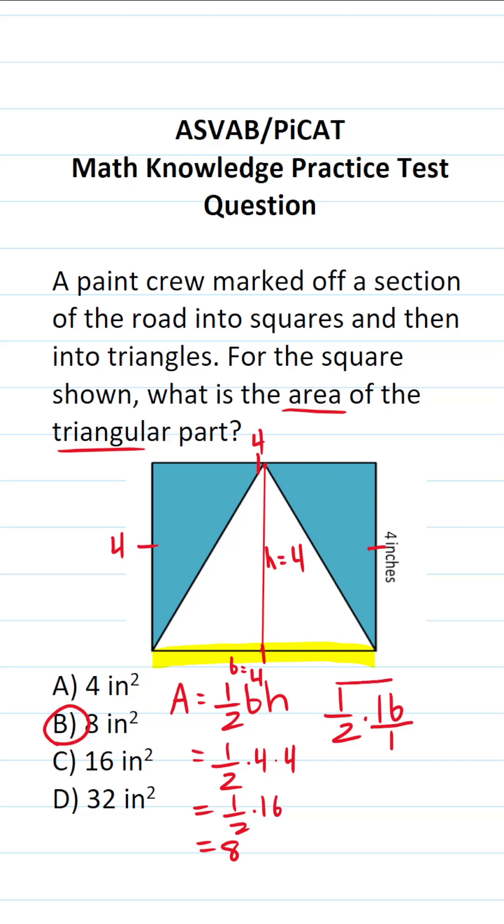Now you're multiplying two fractions, and when you multiply fractions, you multiply straight across. One times 16 is 16. Two times one is two. 16 divided by two is eight.